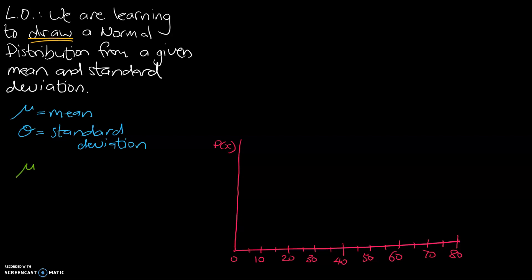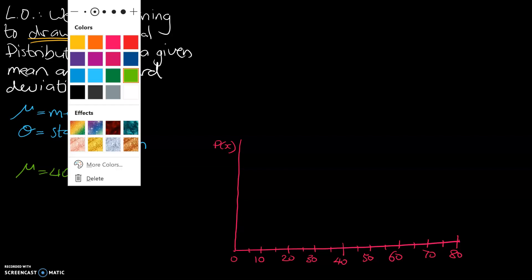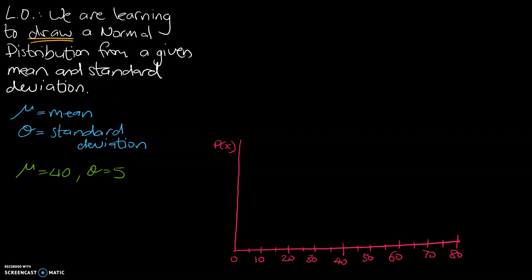If the mean is 40 and the standard deviation is 5, what would that graph look like? So I'm just going to jump back into blue pen to explain something and the way I like to draw a graph. So this is a normal distribution curve, and that mean is always in the middle of that data. So we can always plot the mean.